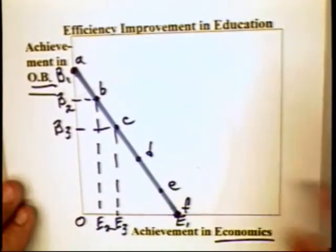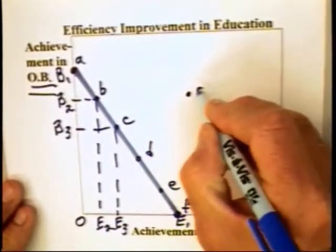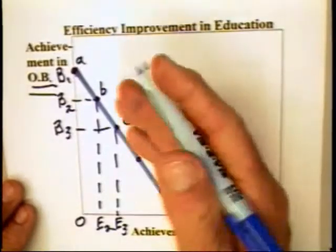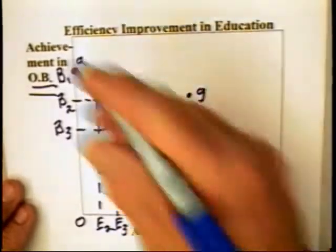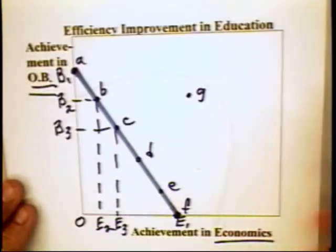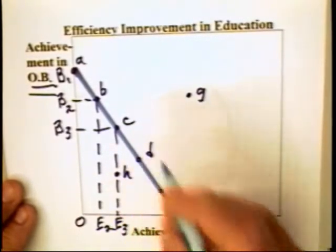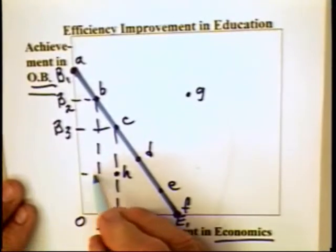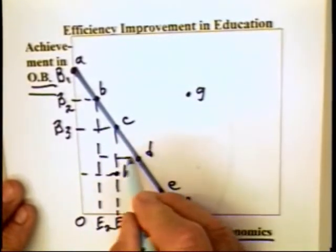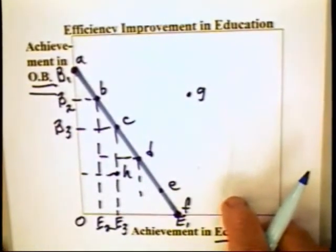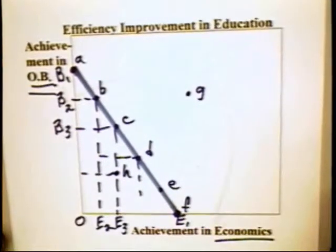This means that the individual cannot achieve combination G or any point above the production possibility curve. If the individual is at H, that individual is clearly not maximizing, because they could move to combination D and learn more economics and more organizational behavior.